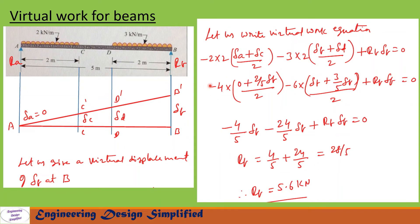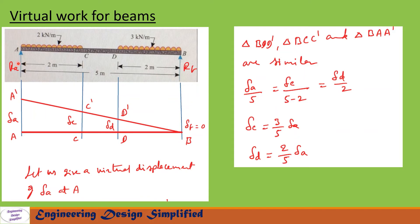Writing the virtual work equation: the UDL of 2 kN/m over 2 m gives total load 2×2, with average displacement (δA + δC)/2 = δC/2 since δA = 0. Similarly, the UDL of 3 kN/m over 2 m gives total load 3×2, with average displacement (δD + δB)/2. The equation is: −2×2×(δC/2) − 3×2×(δB + δD)/2 + R_B·δB = 0. Substituting δC and δD in terms of δB and simplifying gives R_B = 5.6 kN.